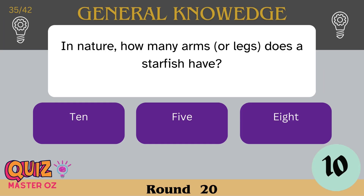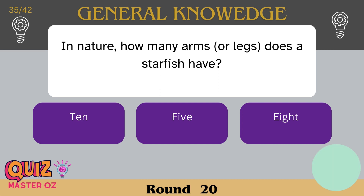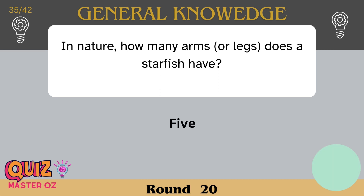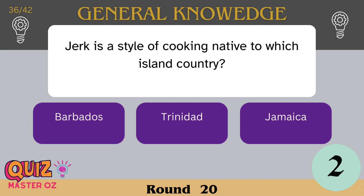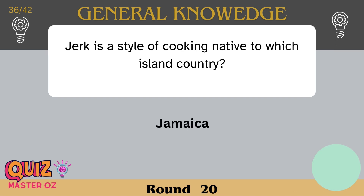In nature, how many arms or legs does a starfish have? Five. Jerk is a style of cooking native to which island country? Jamaica.